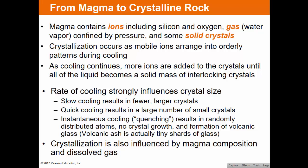As cooling continues, more mobile ions slow down and are added to crystals until all the liquid becomes solid, interlocking crystals. The rate of cooling strongly influences the size of those crystals. Slow cooling results in fewer but much larger crystals you can actually see — think granite countertops. More rapid cooling results in a larger number of much smaller crystals, often too small to see with the naked eye. Instantaneous cooling, called quenching, results in no crystal growth and forms volcanic glass.